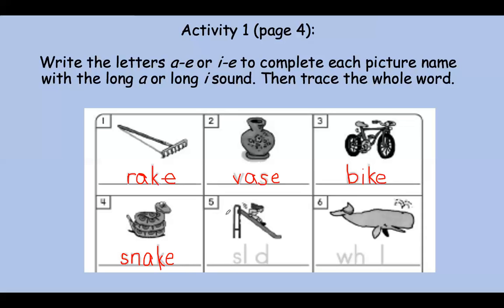What is this? Yep, that's a slide. Let's say it slow. Slide. Do you hear that long A or the long I sound? Slide. Right, it's the long I sound. So we're going to write in the I. This is our consonant. And here's our E. Slide. Let's trace it.